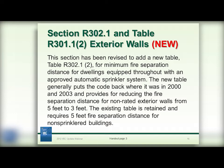Moving on from the discussion of wind to section R302.1 and table R301.1 regarding exterior walls. The section has been revised to add a new table for minimum fire separation distance for dwellings equipped throughout with an approved automatic sprinkler system. The minimum clearance to lot lines has been reduced from 5 feet to 3 feet for unrated exterior walls when the dwelling is protected with an automatic fire sprinkler system. The code now permits construction of unrated exterior walls on the lot line when all dwellings in the subdivision are protected with automatic fire sprinkler systems and the opposing lot maintains a minimum 6-foot clearance from the common lot line.